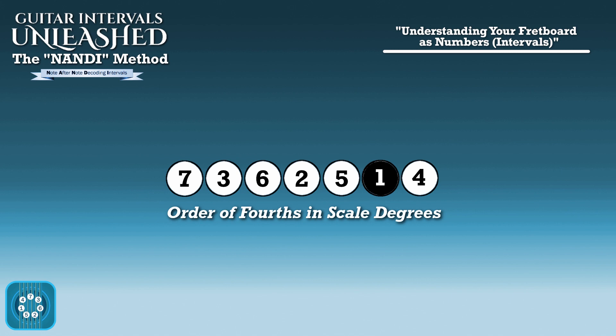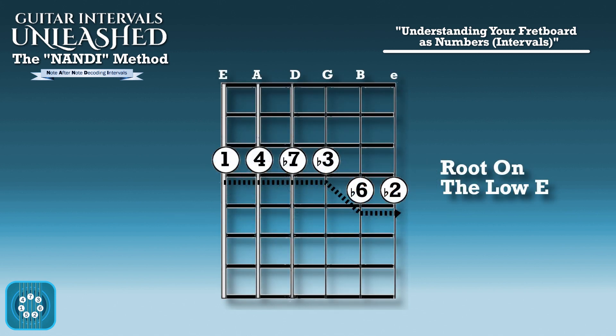But it's also important to just know how to cross the fretboard. Let's say your root was on the low E string. If you were to just go across the fretboard in fourths, it would look like this: 1, 4, b7, b3 would all be on the same fret. Then from our G to B string we have to make a half step adjustment because the distance from our G to B string is a major third and not a fourth, which brings us to b6 and b2.